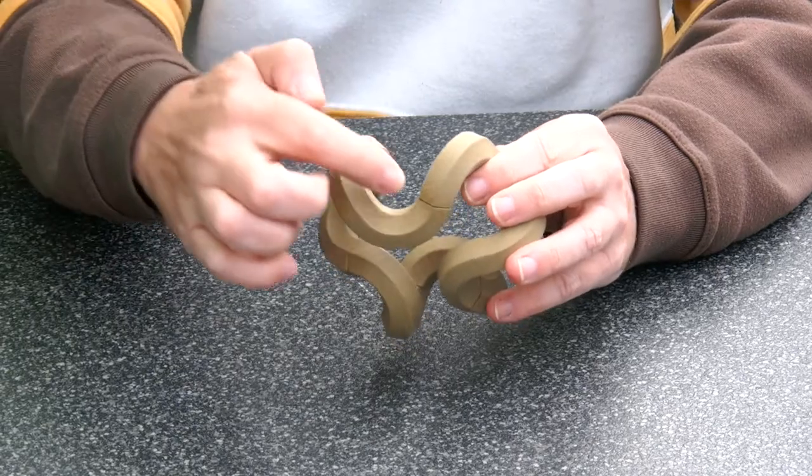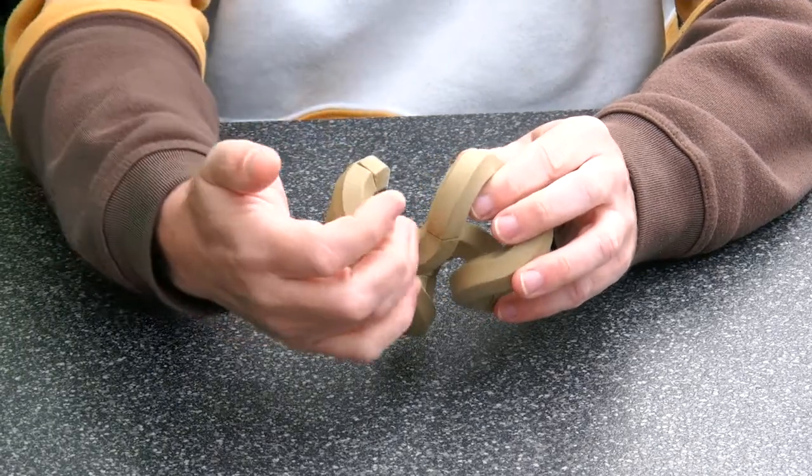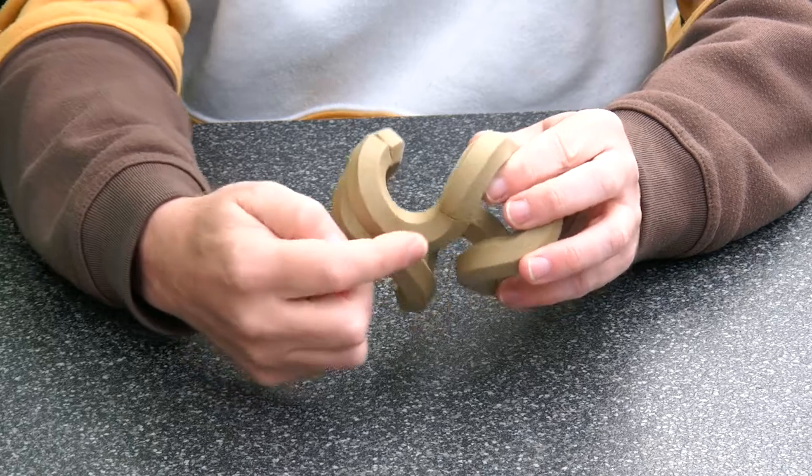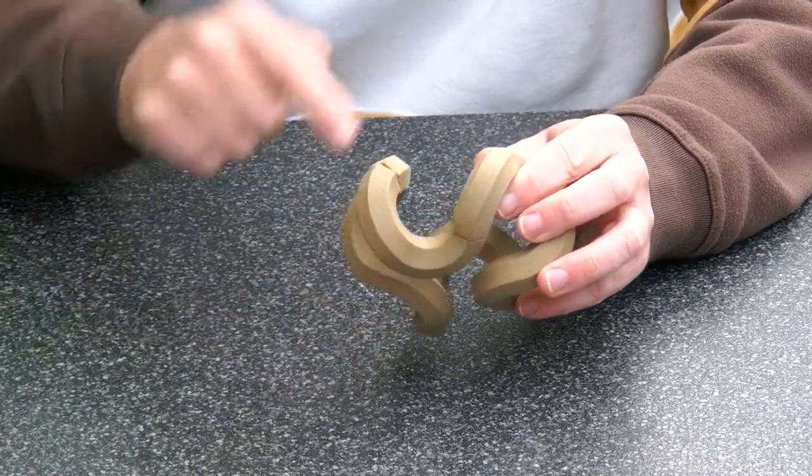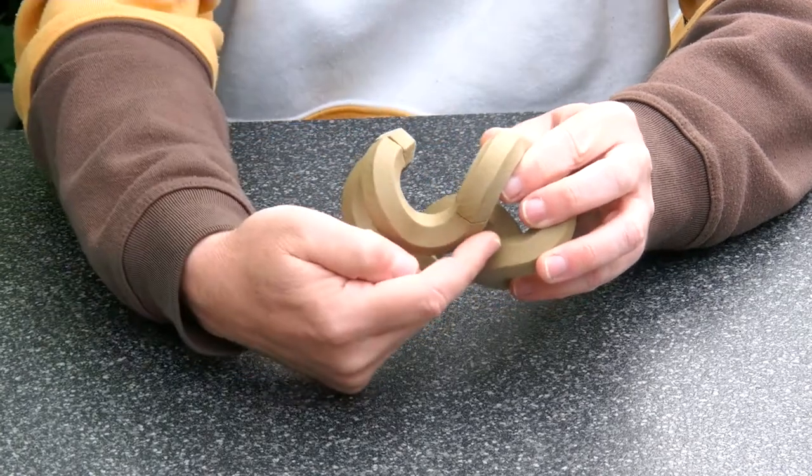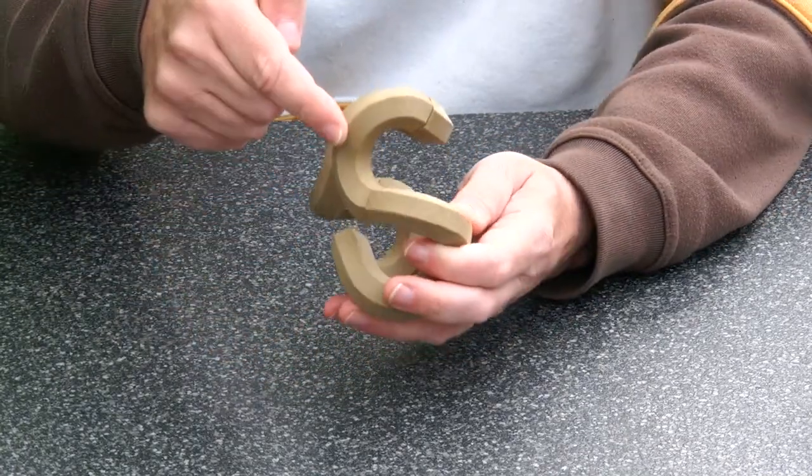Each of these sections has a hexagonal cross section and consists of two arches of 120 degrees. Here we have one arch of 120 degrees like this, and here we have the other.